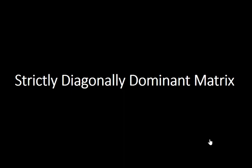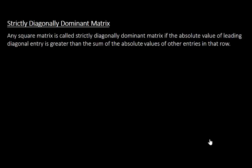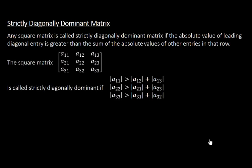Hello my dear students. In this video I'm going to talk about strictly diagonally dominant matrix. Any square matrix is called strictly diagonally dominant matrix if the absolute value of the leading diagonal entry is greater than the sum of the absolute values of other entries in that row. For example, we have a 3 by 3 square matrix.